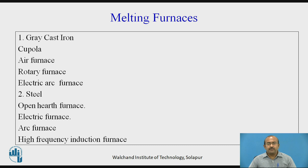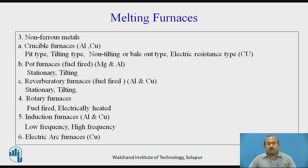Melting furnaces are basically classified according to which metal is going to be melted. For grey cast iron: cupola, air furnace, rotary furnace, and electric arc furnace. For steel: open hearth furnace, electric arc furnace, and so on. For non-ferrous metals, crucible furnaces are normally used — more specifically for aluminium and copper — and are further classified as pit type and tilting type.